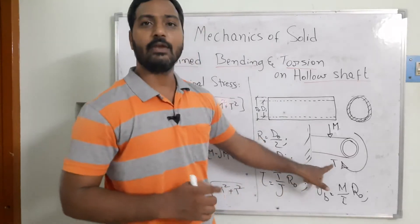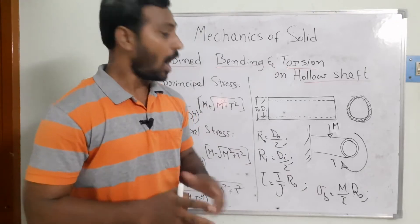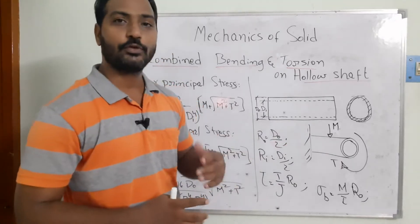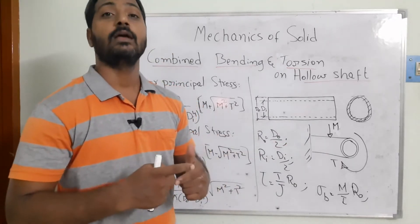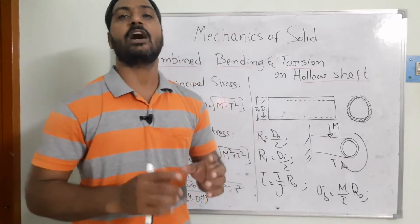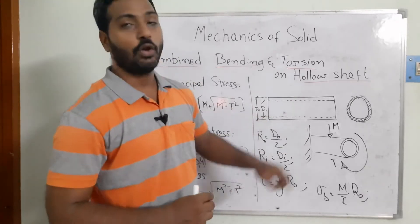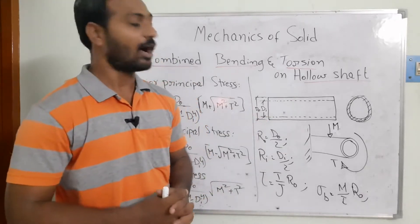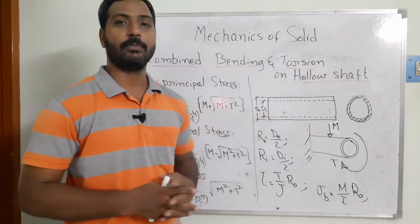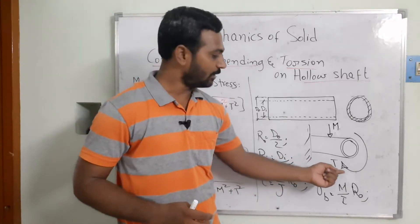Now, how are the bending forces going to come? As we know, torque is applied and shear stresses develop. The bending stresses come because of the bending moment. When we use this shaft to transmit power from one shaft to another — by inserting gears, pulleys, or chain drives — the load comes transversely, and automatically the bending loads and bending stresses develop.